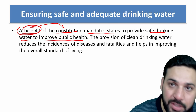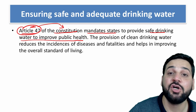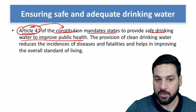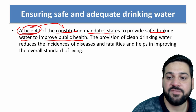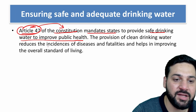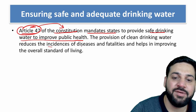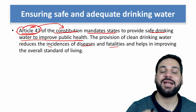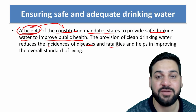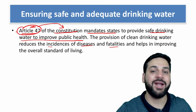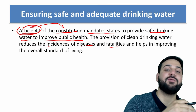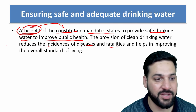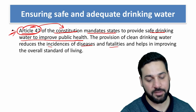It is the duty of the Government of India to provide safe drinking water to its people. The provision of clean drinking water reduces the incidence of diseases and fatalities. According to Article 47, it is mandatory for the government to provide drinking water and ensure that water is safe. Remember Article 47 of the Indian Constitution.